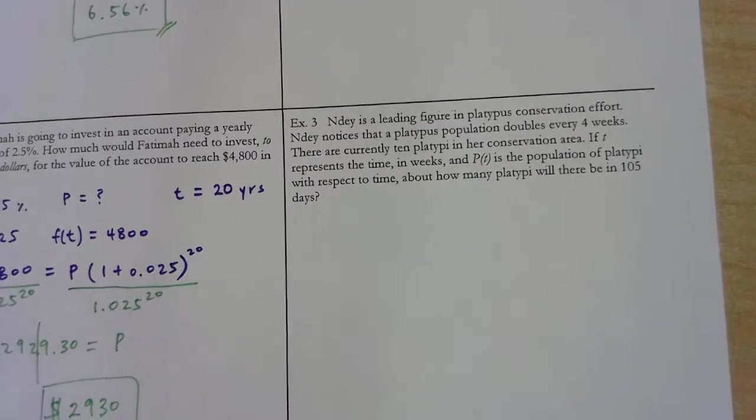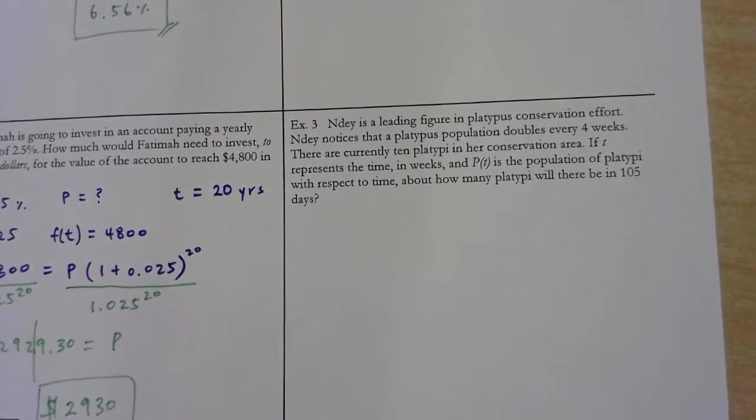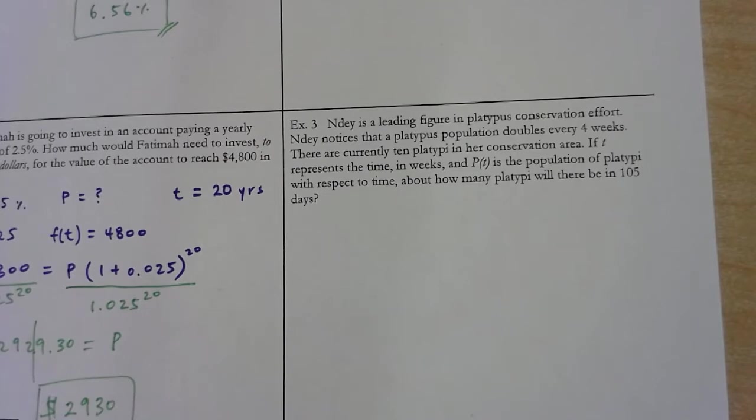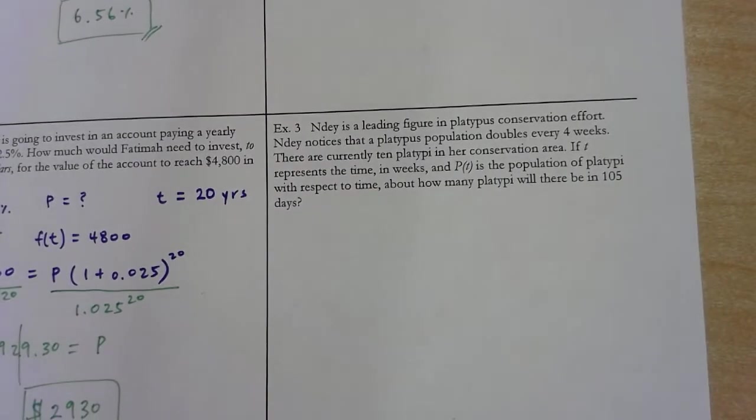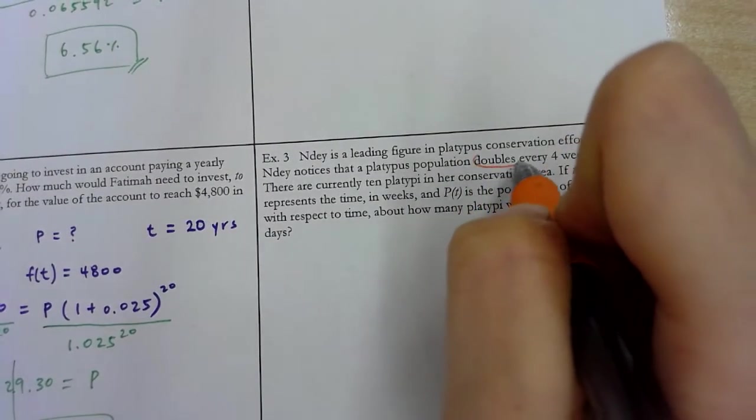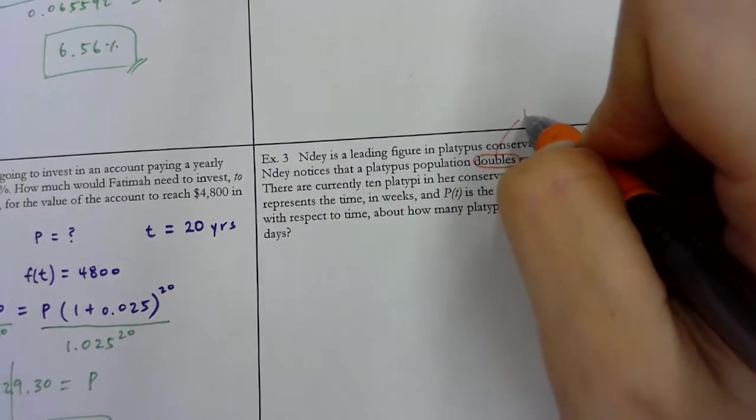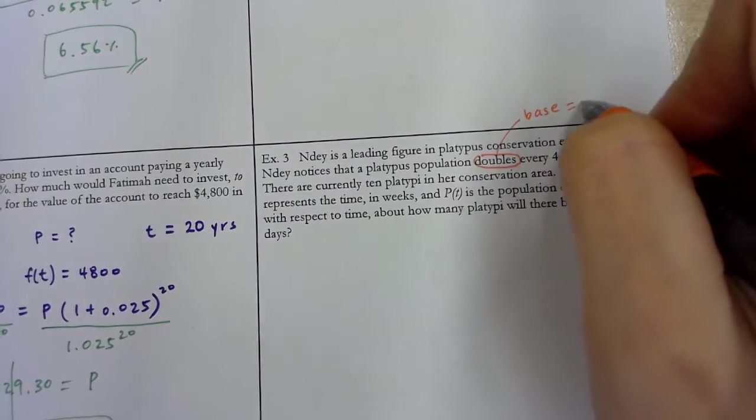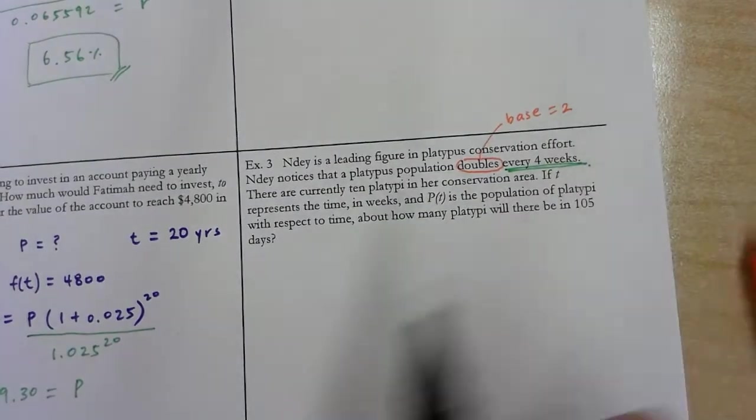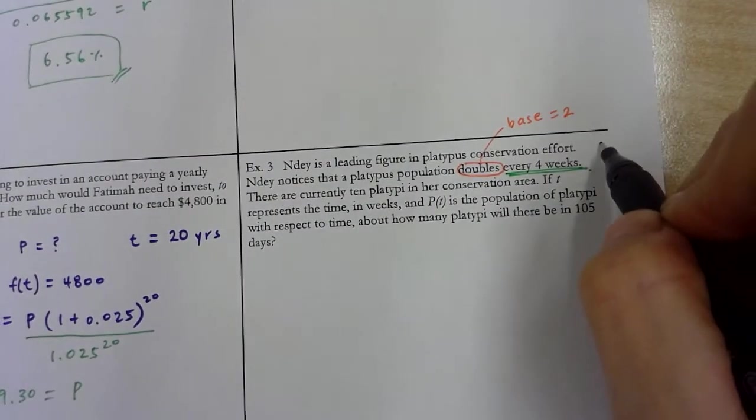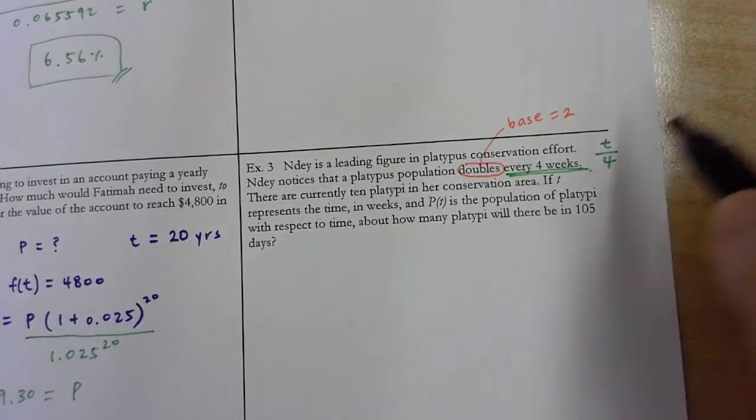Last one. Let's go. Example 3: Nader is a leading figure in platypus conservation effort. Nader notices a platypus population doubles every four weeks. Doubles. We already know that the base is 2. Every four weeks. We learned it. Every four weeks. That means my exponent is going to look like t over 4.